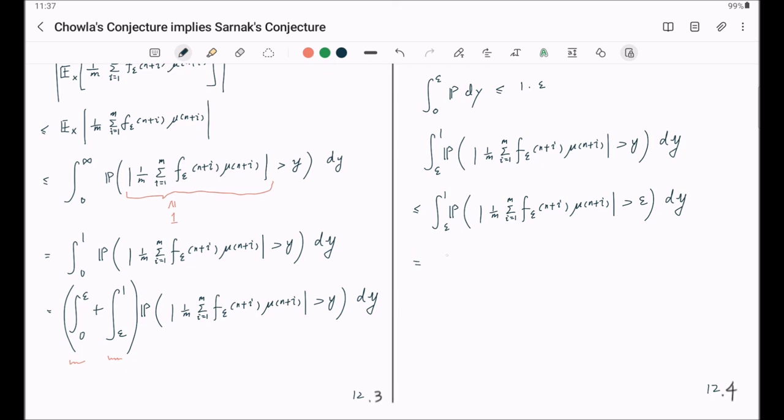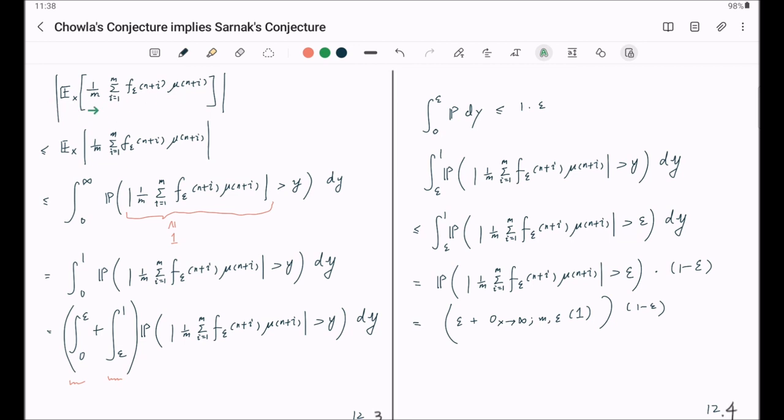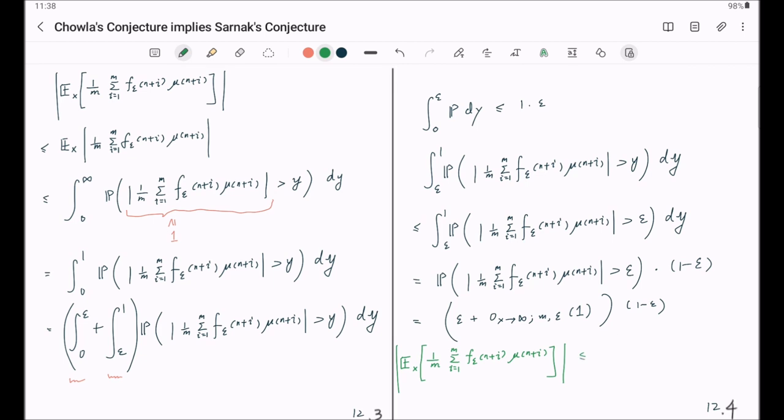Which is equal to this probability times 1 minus epsilon. But we already know an estimate for this part. Which is epsilon plus little o of x goes to infinity M epsilon, little o of 1. Combining these two, we have this expectation is equal to 2 epsilon plus this small term.